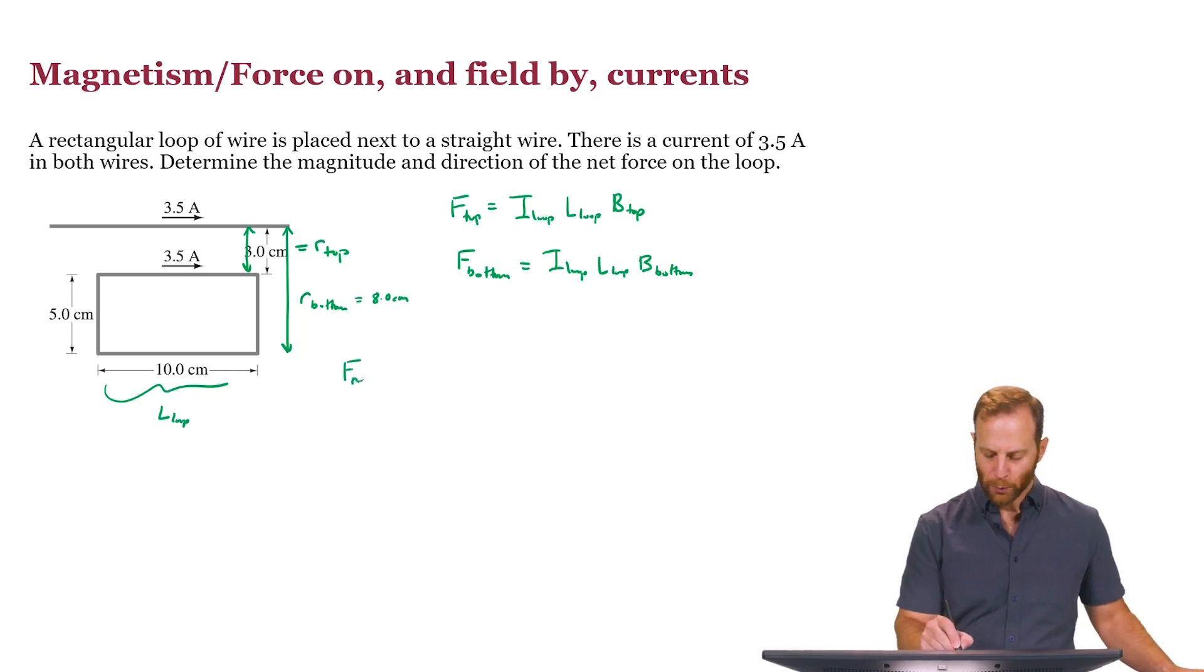So therefore, what we'll do is we can write the net force in the vertical direction. Let's write it like this. Let's let this be the Y direction. This would be the force pointing up minus the force pointing down. And so, factoring out the common current and length, this looks like I loop times the length, or really the width of that loop, and then times the difference of the magnetic field strength on the top and on the bottom.